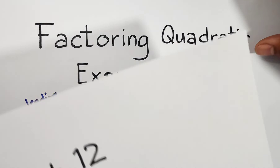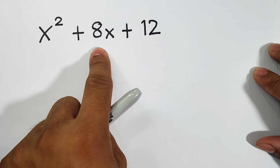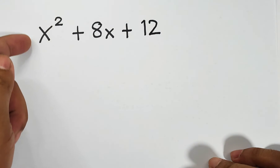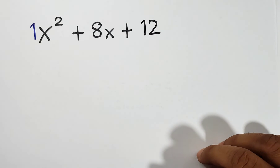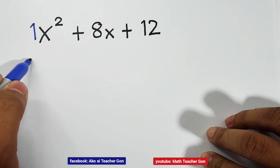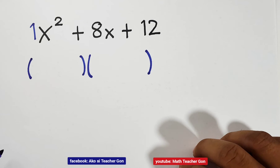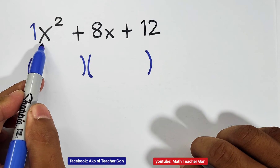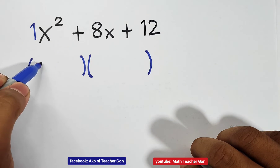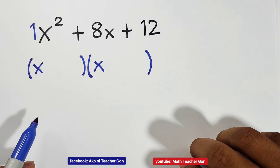Now, let's start factoring a quadratic expression. What we have here is x squared plus 8x plus 12. In our first example, and throughout the three different examples that we have here, the leading coefficient is 1. So, the factors of a given quadratic expression are two parentheses. First, you will think: what are the two things that you need to multiply to get the product of x squared? And the answer is x and x. When you multiply x times x, it will give you the first term x squared.